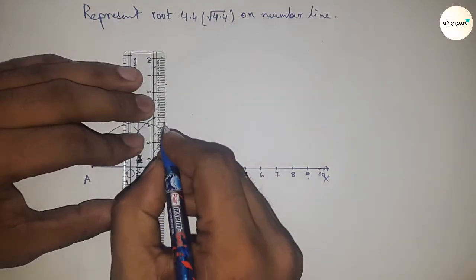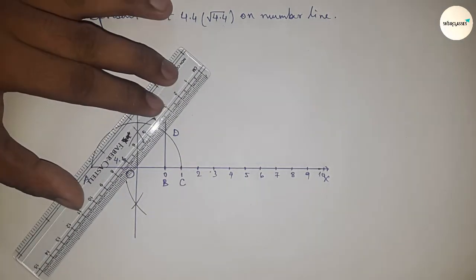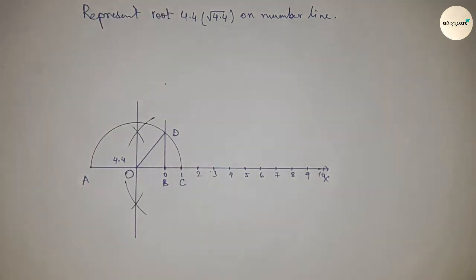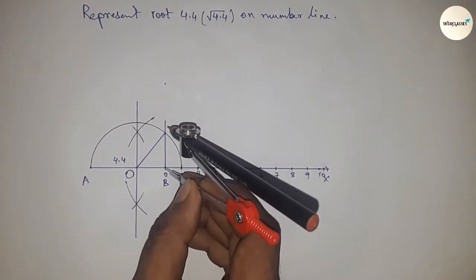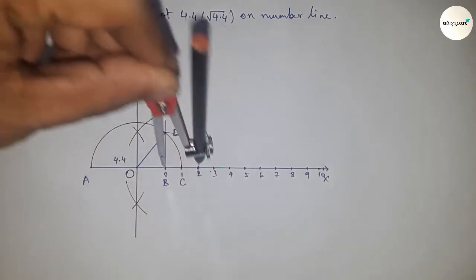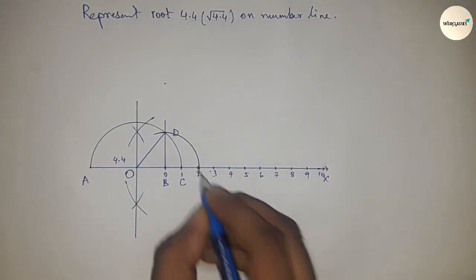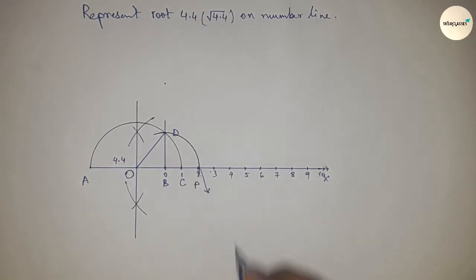Now joining this which meet at a point D. Next, joining this. So now taking the length BD by compass and drawing an arc which meet the number line at a point. So this is P point and this is the representation of root 4.4 on number line.